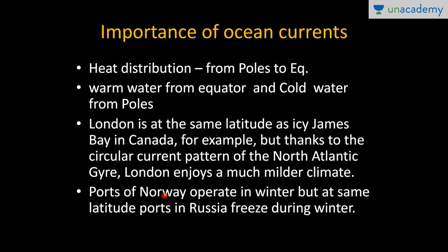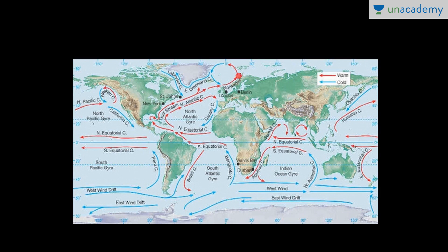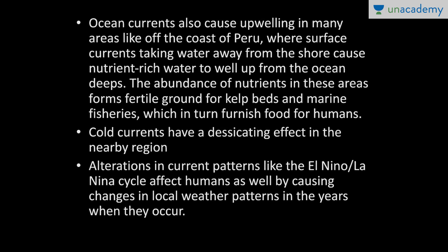Similarly, the ports of Norway remain ice-free in winter, but at the same latitude, ports in Russia freeze during winter. Again, the reason is the warm Norwegian Current — because of this warm ocean current, Norwegian ports remain ice-free, while Russian ports at the same latitude do not benefit from such a current and therefore freeze.